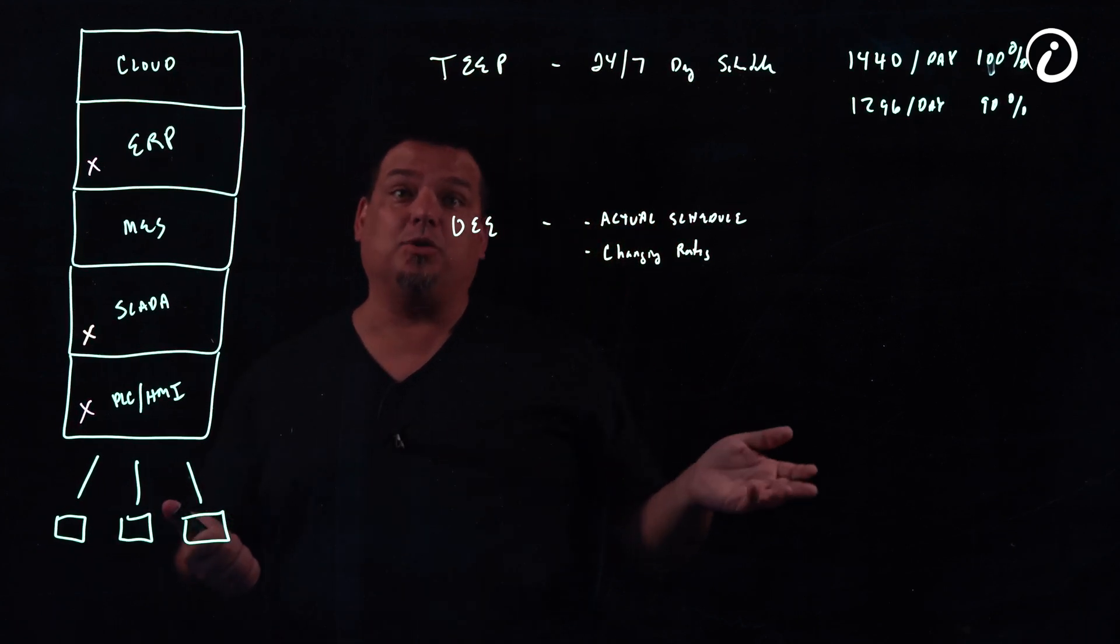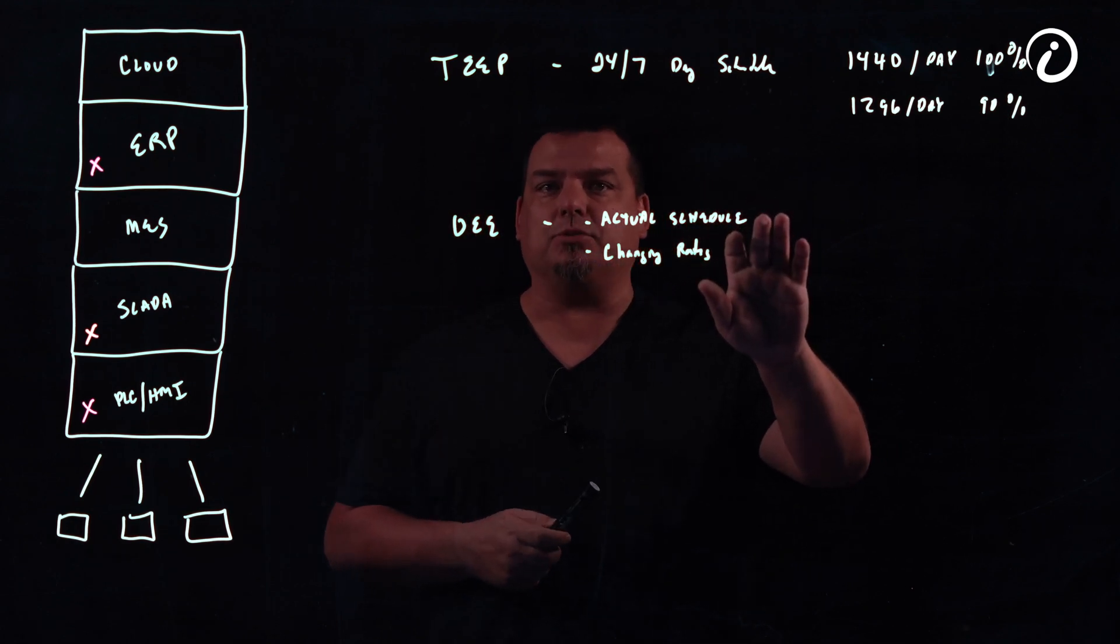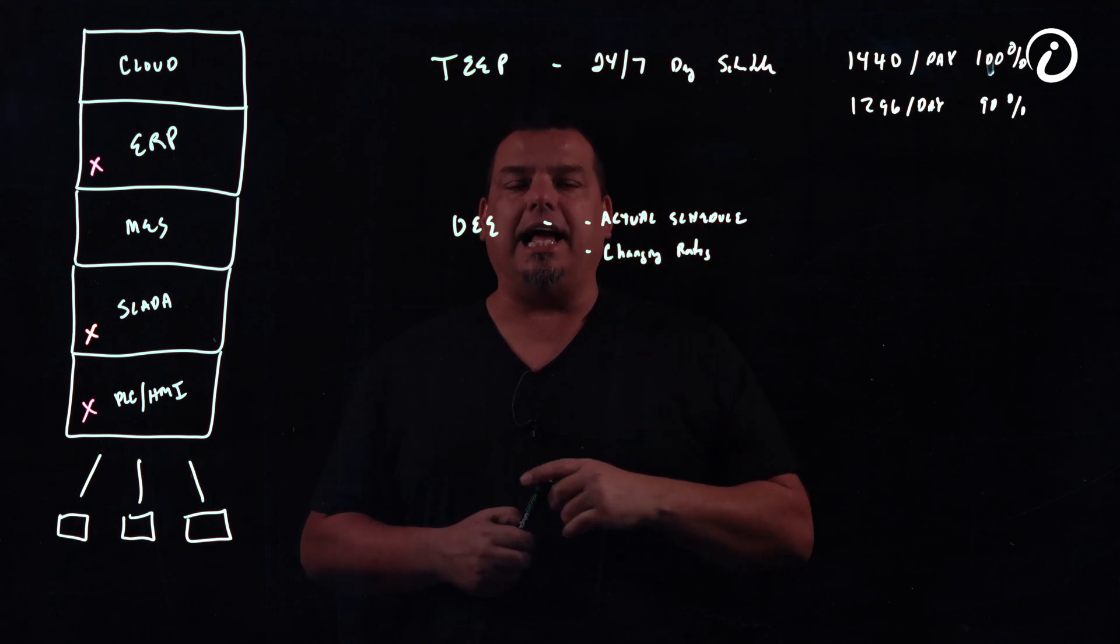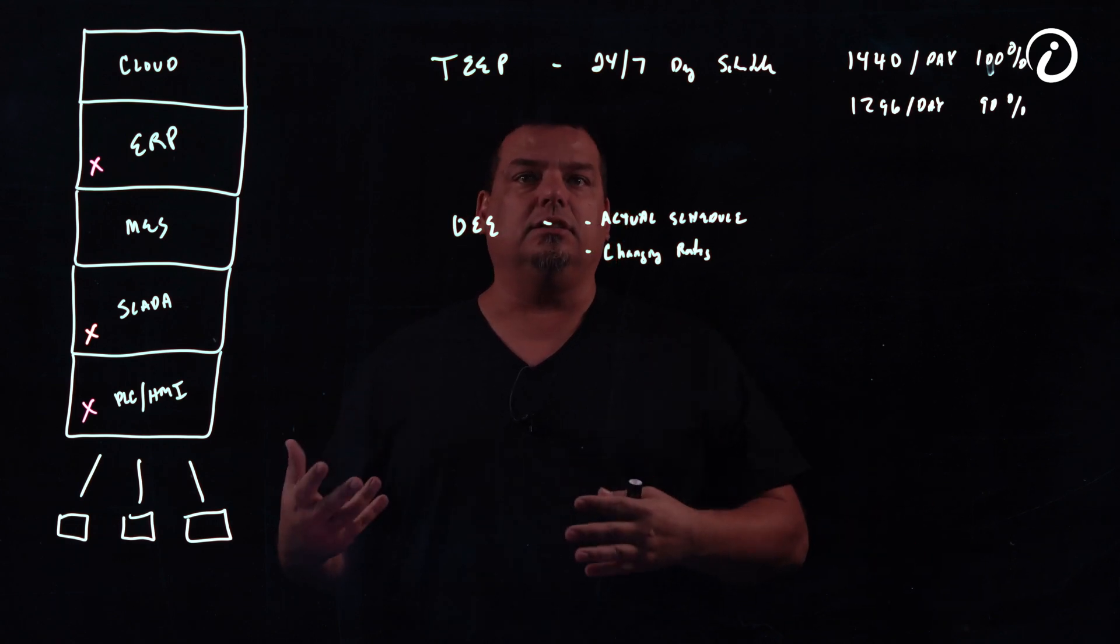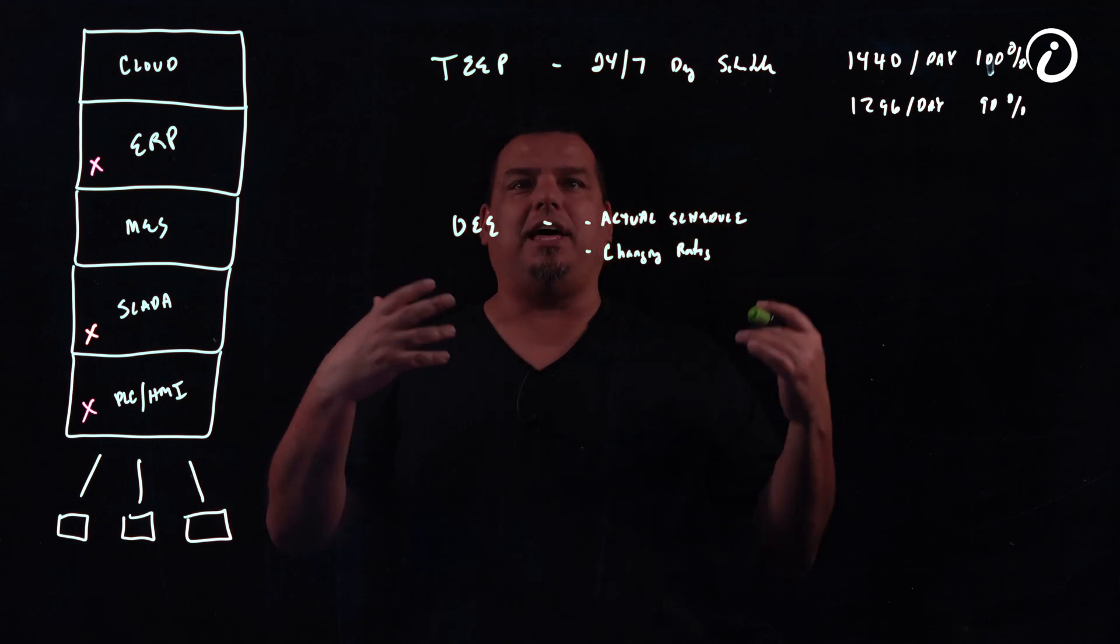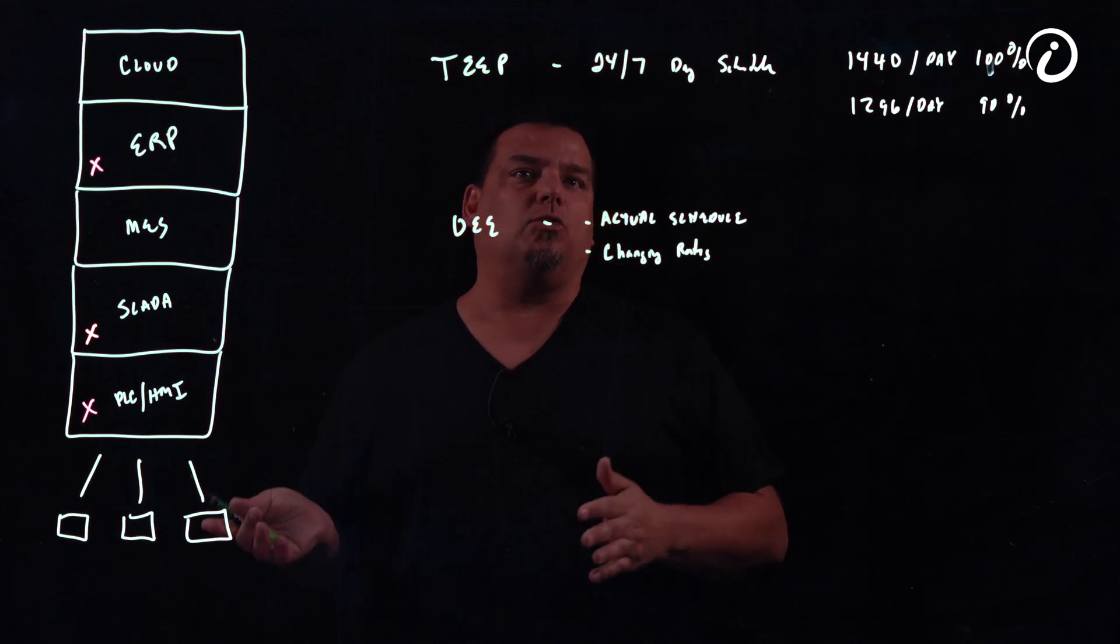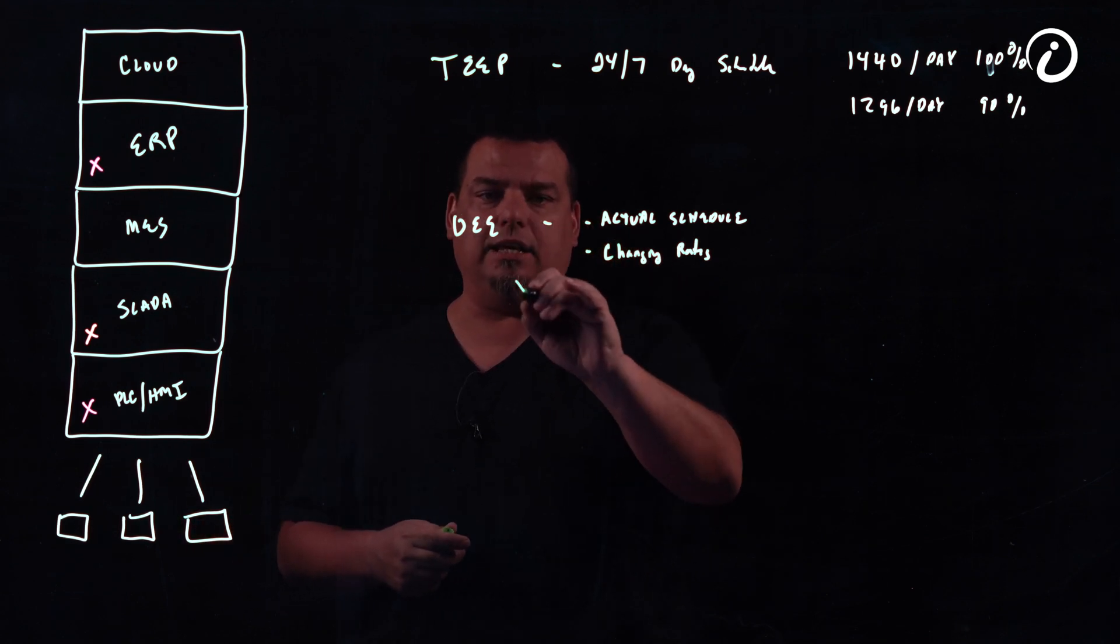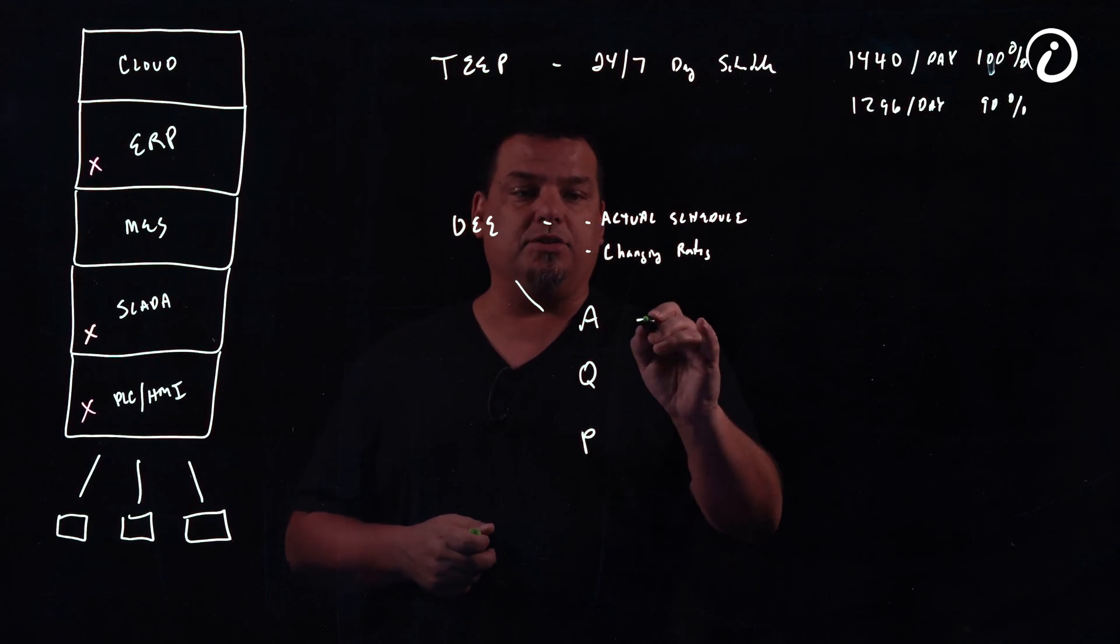OEE takes into account your actual schedule and your changing rates. It doesn't use theoretical rate. I can create a standard rate for how fast I'm supposed to produce a certain product on a line, and that rate is a function of lots of variables. We know that the tank heater doesn't operate that well at this temperature, and therefore I need to run the line slower so the heater can keep up. OEE takes into account this. So what is OEE? OEE is AQP: availability, quality, and performance. These numbers are all on a scale of zero to one hundred percent.